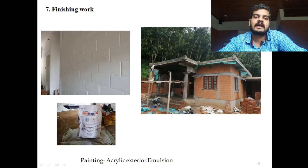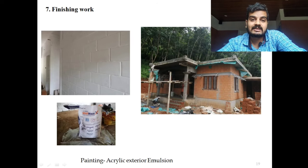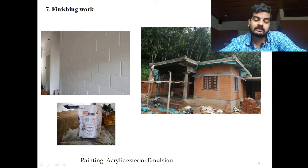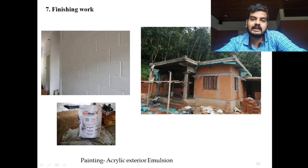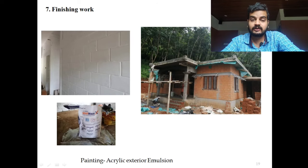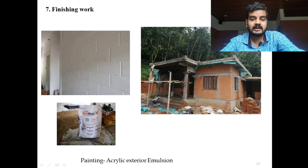For finishing, a waterproof coating should be given as a first coat, especially on exterior walls. At the interior, waterproofing is not required, but giving it is also good. After the waterproofing coating, exterior emulsion paint can be given for finishing. Plastering can be done if needed, but usually plastering is not required — that is the main benefit of interlocking bricks.